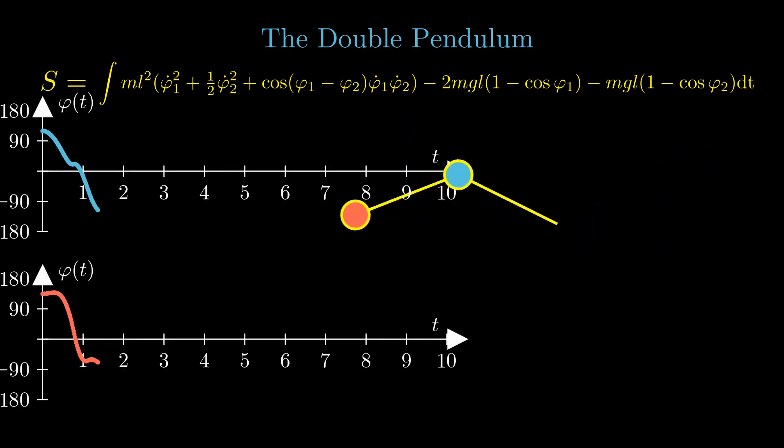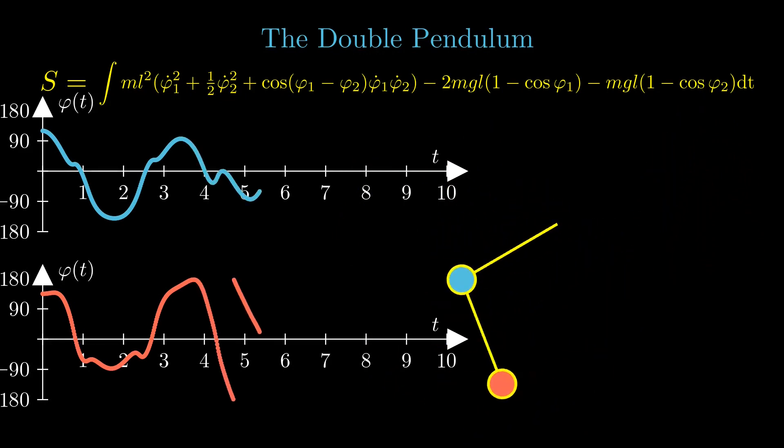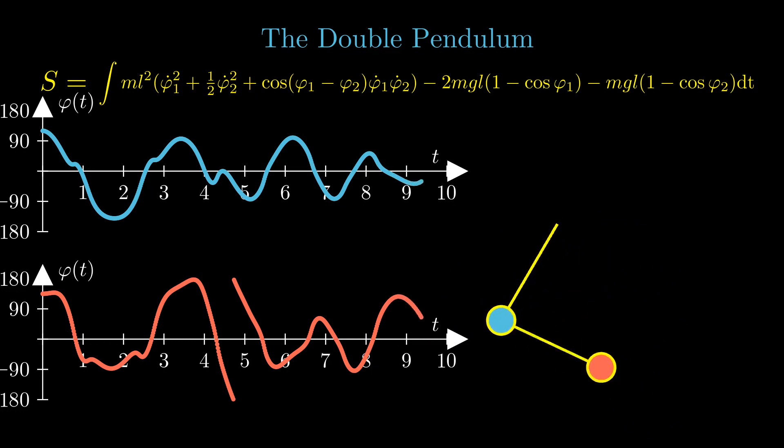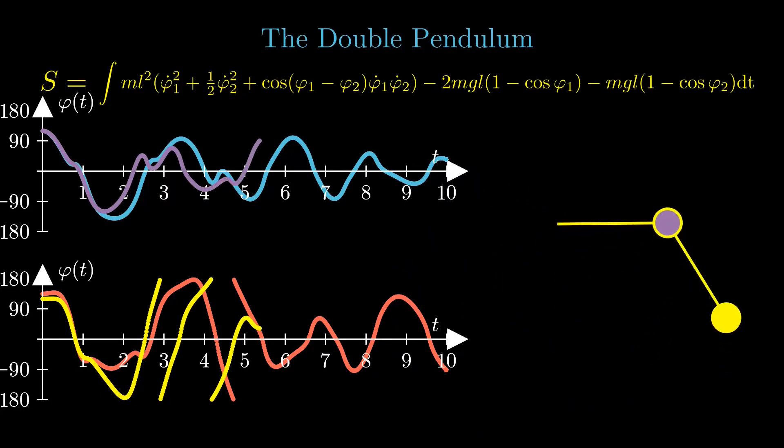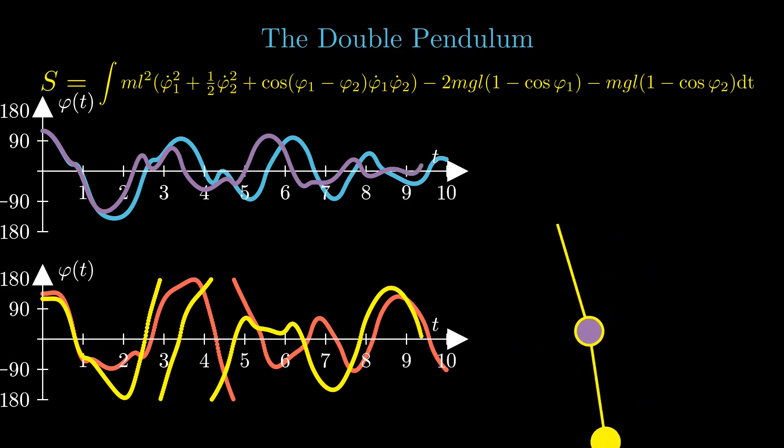The simulation is run a second time with a slight change in the initial conditions of the second pendulum. This causes completely different dynamics in the long run. Therefore, the motion of this double pendulum is more or less unpredictable, since the initial conditions are never known perfectly. And therefore, no simulation is able to track the motion of a real double pendulum for a long time. The system is called chaotic.